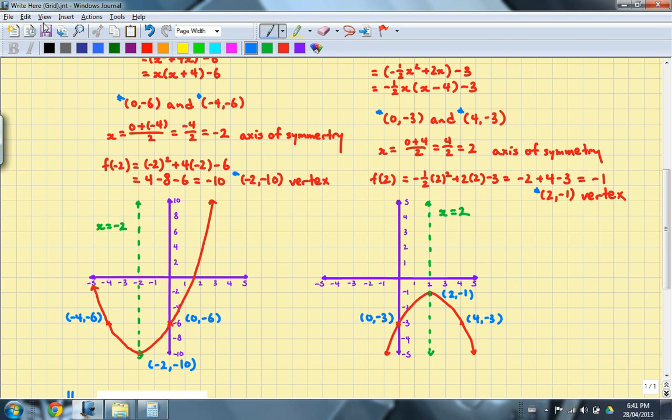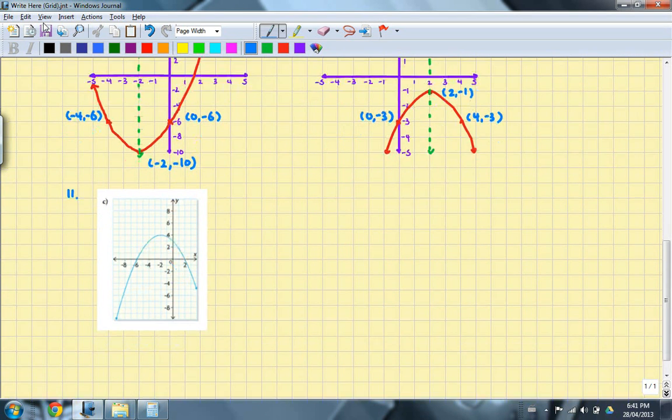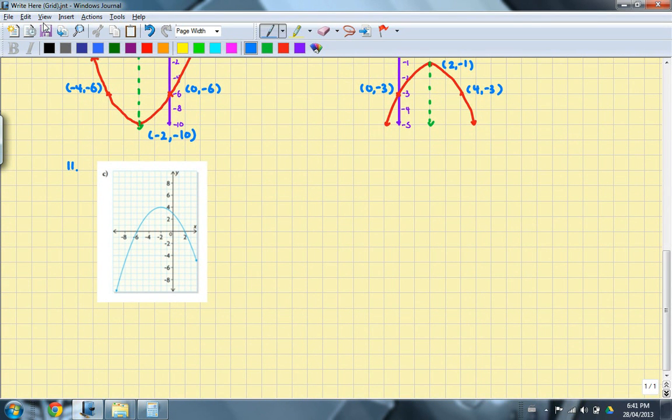So let's move on to the last question. And it's the one where you have to find the equation of the graph given the graph, the parabola. And so the first thing you want to do, like I said in class, is you want to find out what the x-intercepts are. In this case, they are (2, 0) and they are (-6, 0). By the way, this is question 11c.